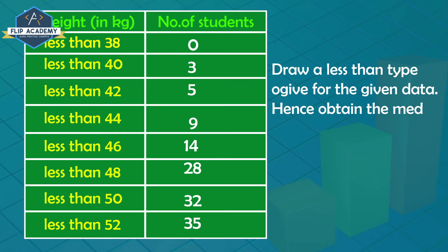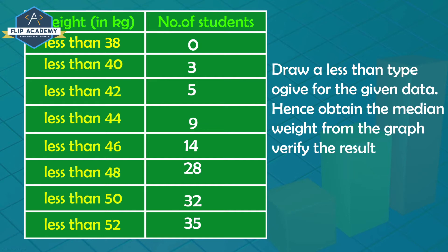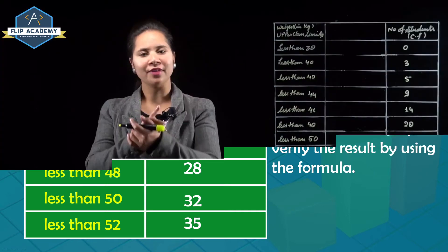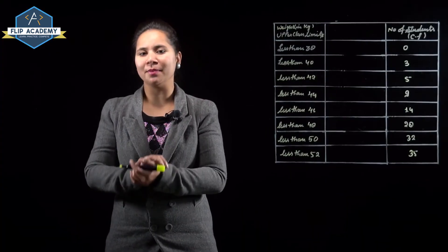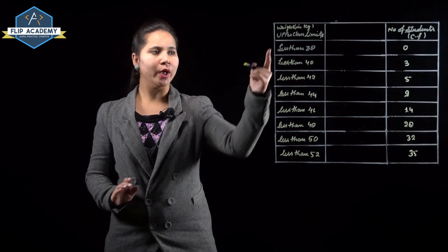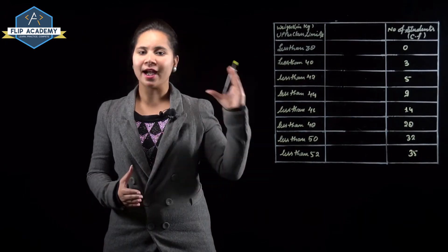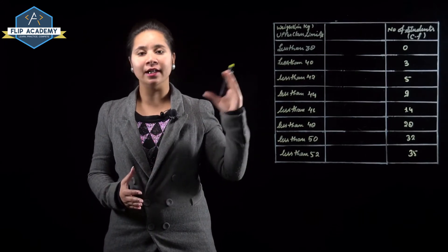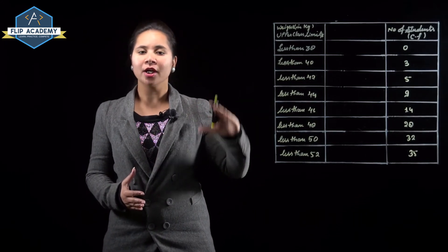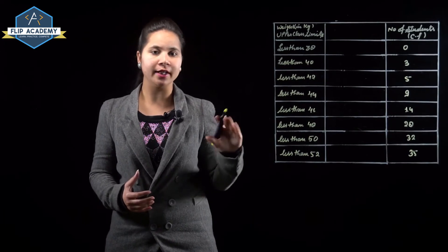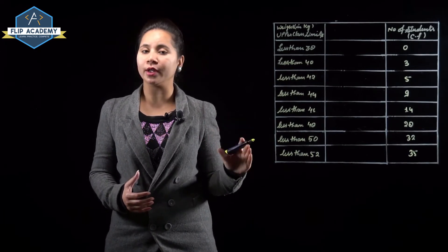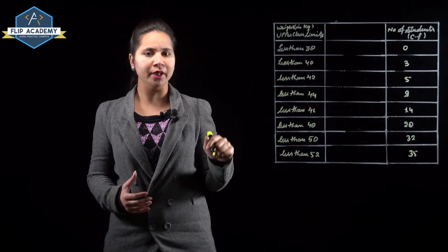Hence obtain the median weight from the graph and verify the result using the formula. This is already a less than type cumulative frequency table. We will find out the ogive and the median.